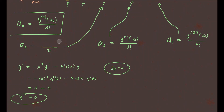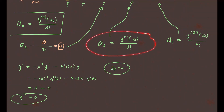So we replace the second derivative expression up here: a₂ equals 0 over 2 factorial, which is simply 0. So the coefficient a₂ is 0. Now let's continue to the next one — we need the third derivative evaluated at x₀ and then divided by 3 factorial.